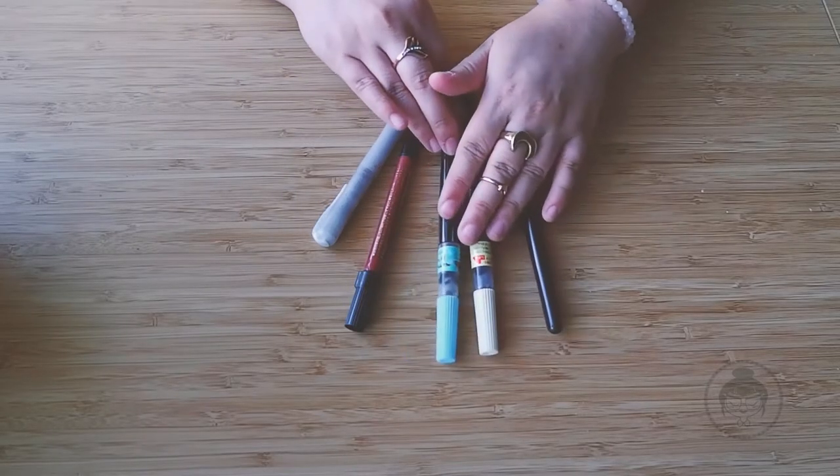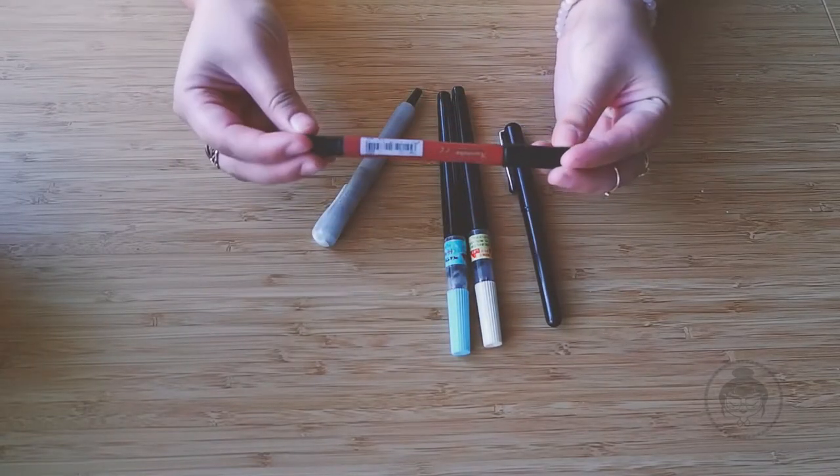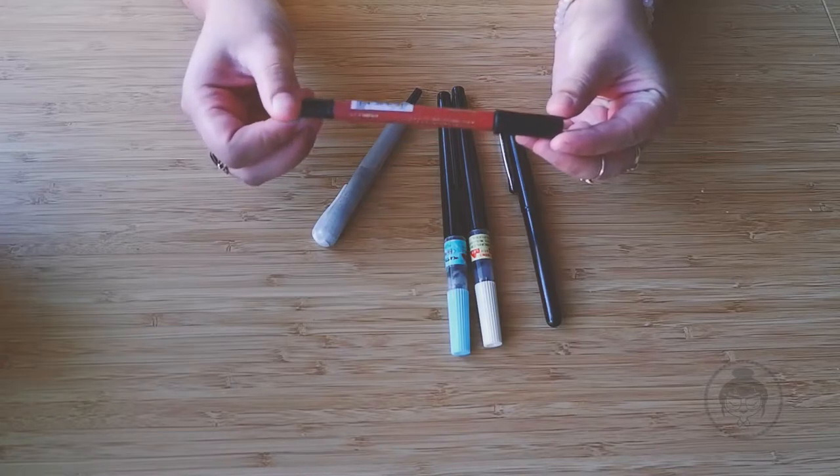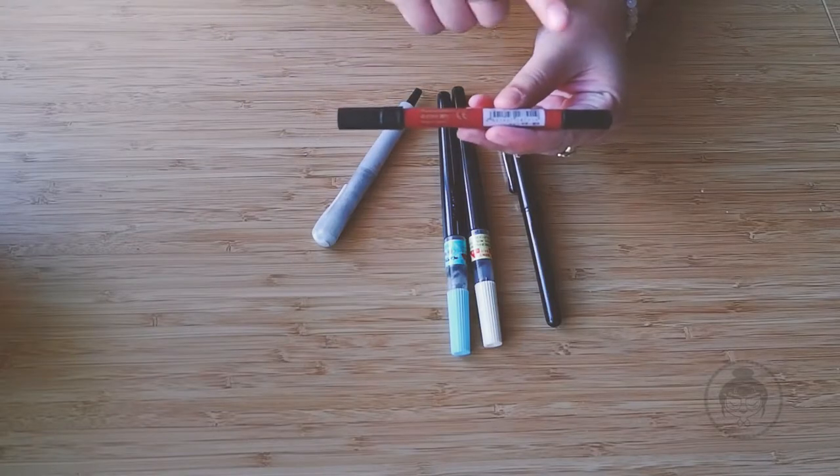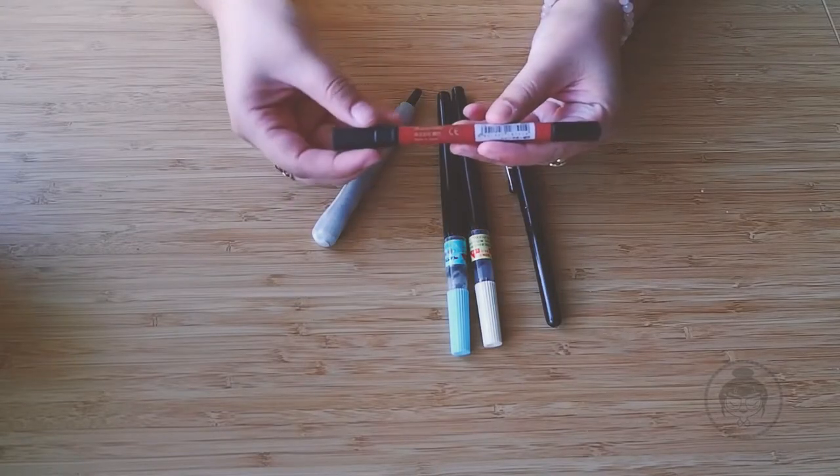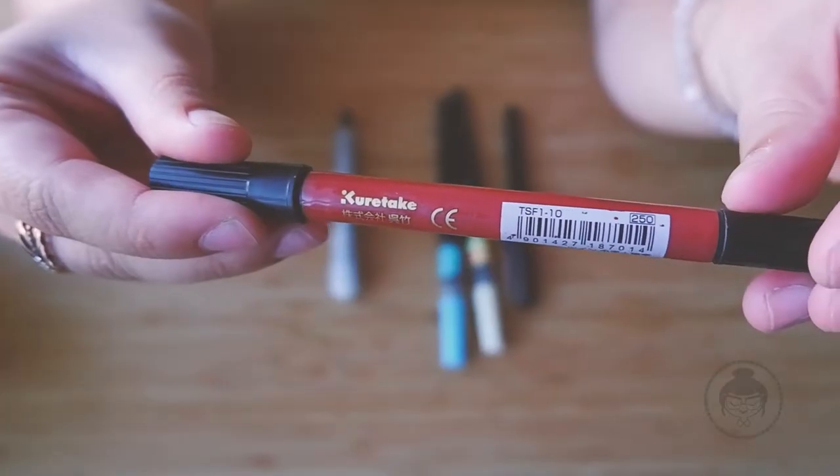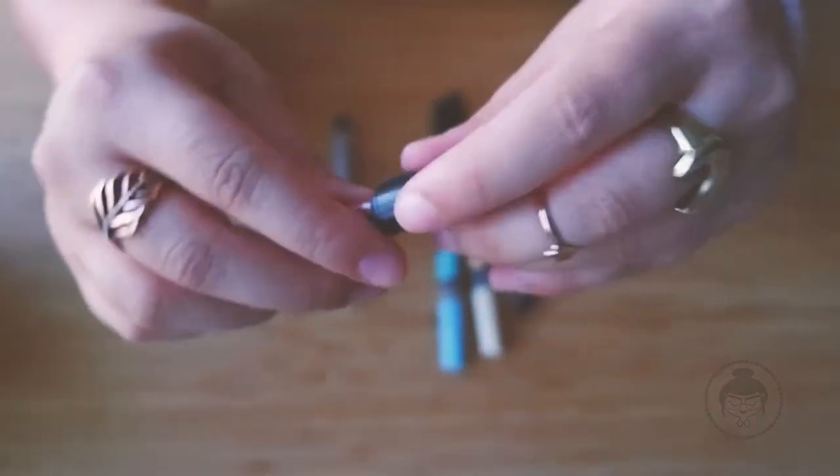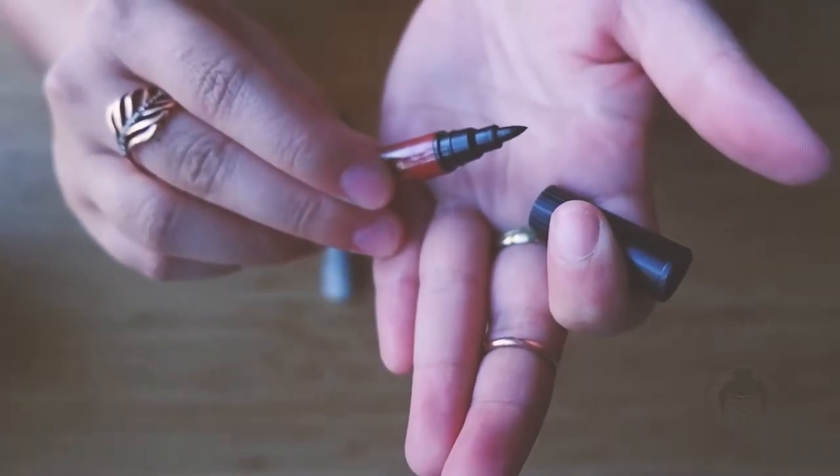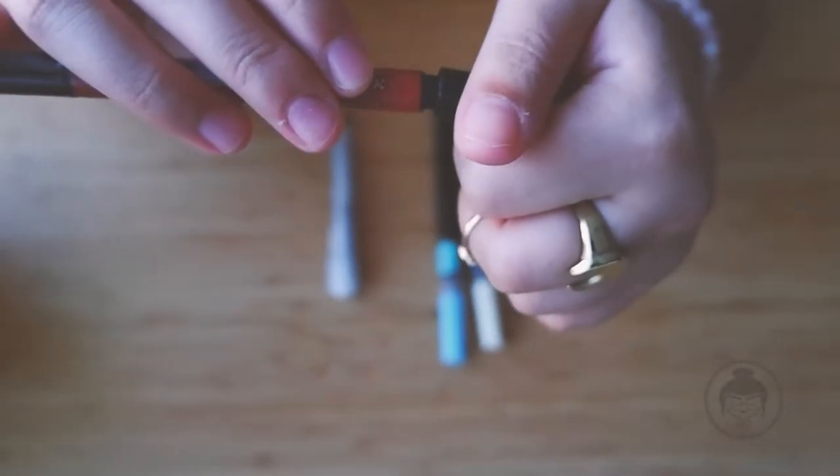Okay, so this next pen here I've had for the longest time. I've been using this for the longest time. It's by Kuretake. It's a double-ended pen and it has two different tips on each side. This pen here is probably one of my holy grail pens that I've had for a long time in my kit. And it doesn't have an actual brush tip. It's more of a felt tip pen, but with that it still gives a pretty decent line weight.